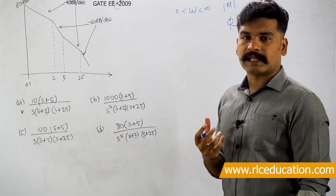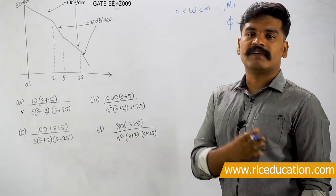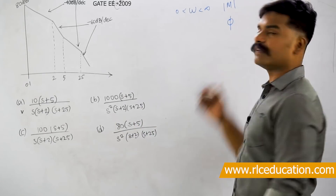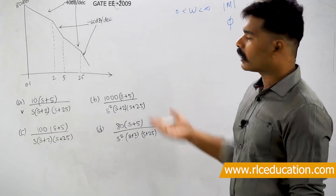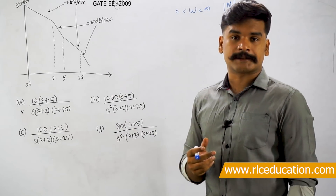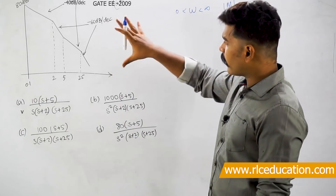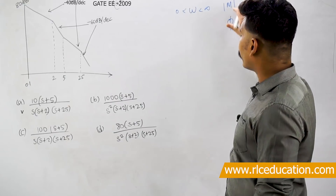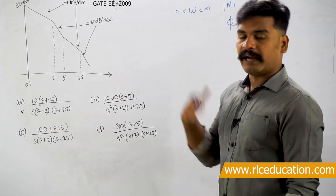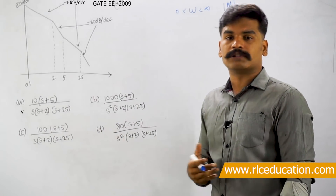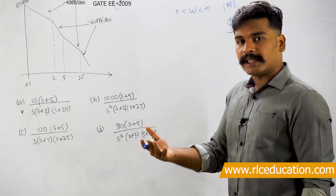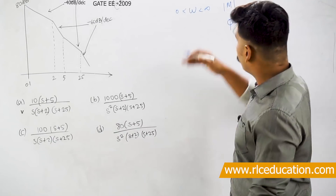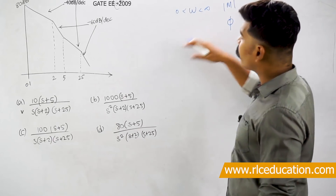In frequency response analysis there are analytical ways and pictorial ways to do magnitude versus phase analysis. Bode plot is the first of those pictorial analysis methods. Using graphs and pictures, we plot the variations of magnitude and phase and try to find out the response or analysis of the system. Whenever you talk about a Bode plot, it has two parts: a Bode magnitude plot and a Bode phase plot.